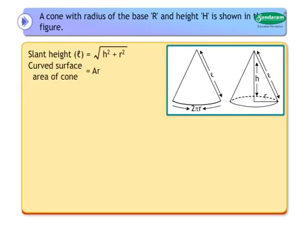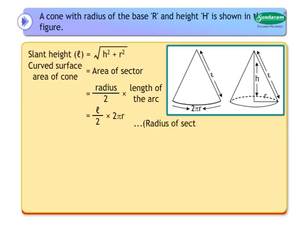Curved surface area of a cone equals the area of a sector, which is equal to radius upon 2 into length of the arc, equal to L upon 2 into 2πR, where the radius of the sector is L. Therefore, curved surface area of the cone is equal to πRL.